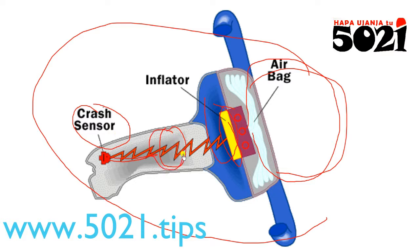The crash sensor signal passes through the control box before going to the inflator. This is because sometimes the car may hit something by mistake, so the system needs to verify whether the car genuinely had an accident or just a minor impact.